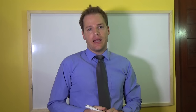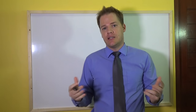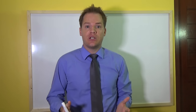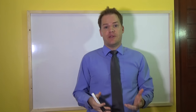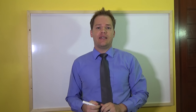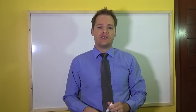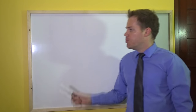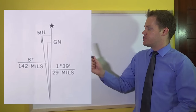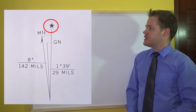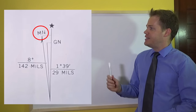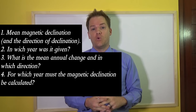When your teacher asks you to calculate the magnetic declination, they might give you a map and ask you to find the information on it. This information regards the mean magnetic declination. What you'll see at the bottom of the map will look more or less like this — where the star is, that is where true north is, then there's the grid north as well as magnetic north.